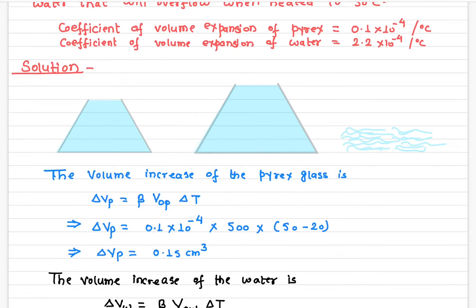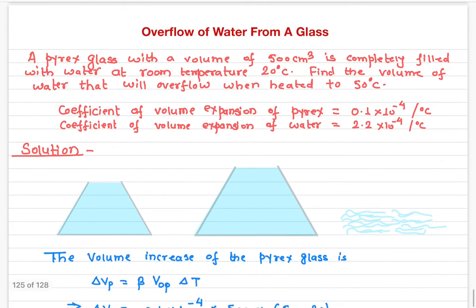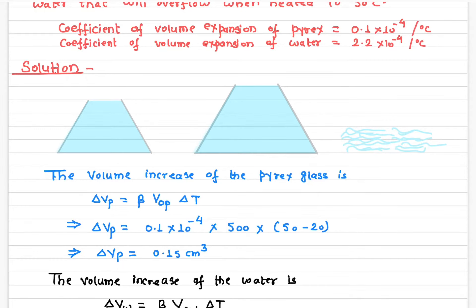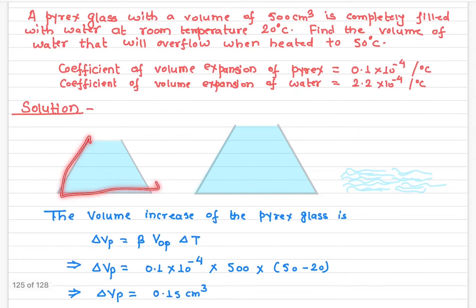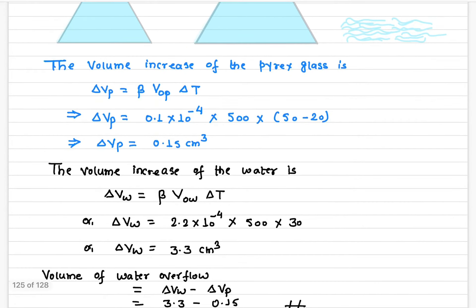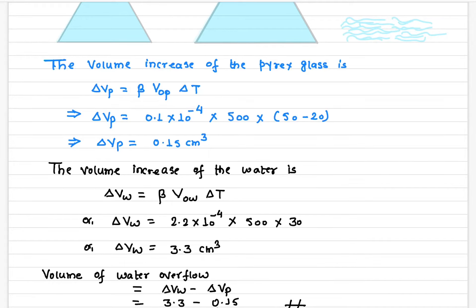Beta for the Pyrex glass is 0.1 times 10 to the negative 4, the initial volume of the Pyrex glass is 500 cubic centimeters, and the change in temperature is 50 minus 20, which is 30 degrees. Plugging these into the equation gives a change in volume of 0.15 cubic centimeters for the Pyrex glass. Note that the figure shown is exaggerated.